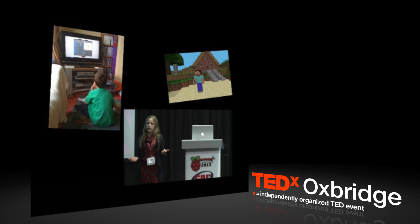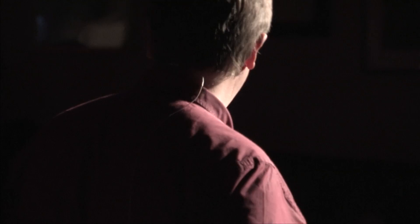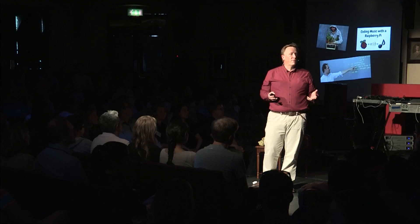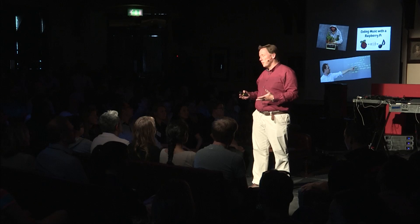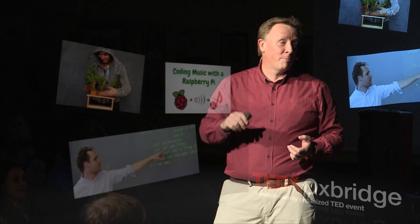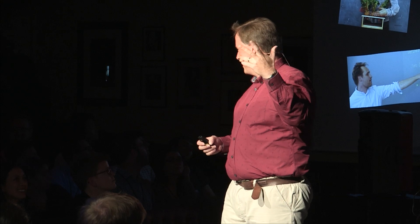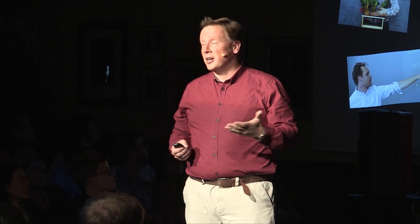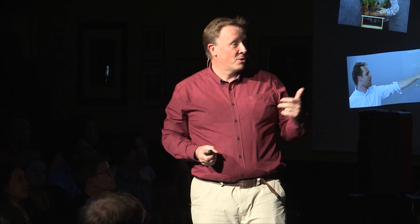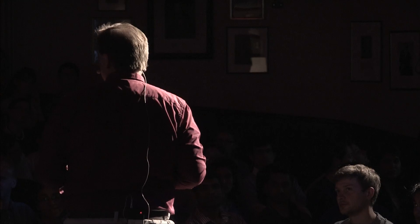If you want to widen participation and get more people to understand how technology works, a good way is to find something they already have some affinity to. Music is a great way to engage kids in technology and programming. The first example is a beatbox made out of vegetables — turnips, carrots, swedes, etc. Each vegetable is wired up to the Raspberry Pi with a capacitive touch sensor, so when you touch those vegetables, they play a different drum machine sound. You can make your own drum machine out of vegetables — how cool is that?